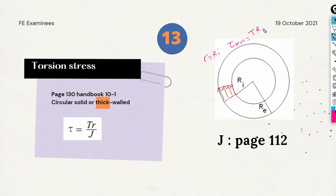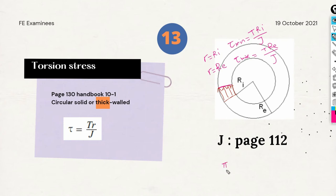The minimum stress is T times r_inner over J, and the maximum stress is T times r_outer over J. The variation is linear between these two values. J equals pi over 2 times (r_outer to the 4th minus r_inner to the 4th). As noted, setting r_inner to zero gives the polar moment of inertia for a solid circular shape.